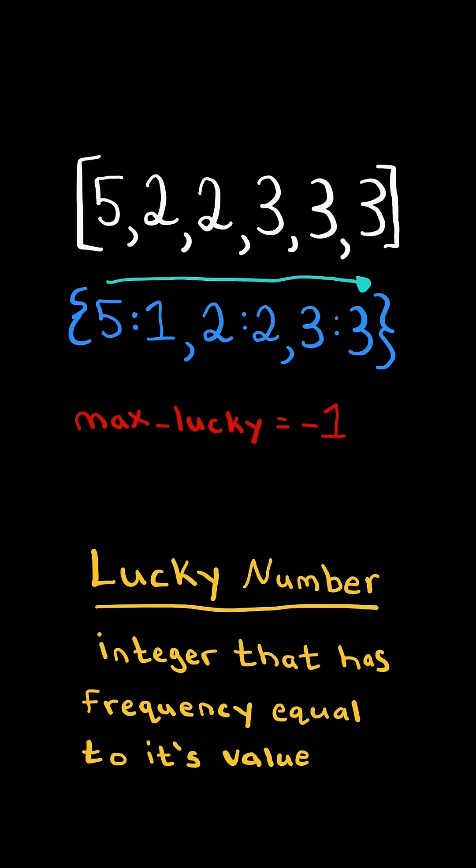We iterate through the dictionary. If the number does not match its frequency, we continue. If the number does match its frequency, then we update max lucky to the maximum of itself or the new number.